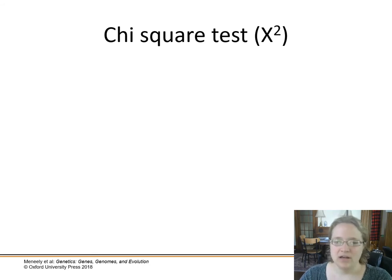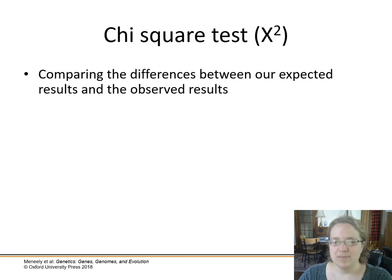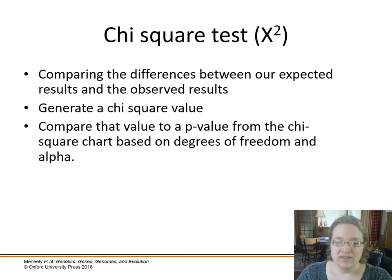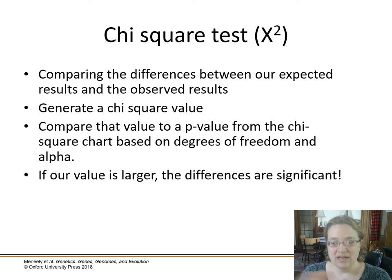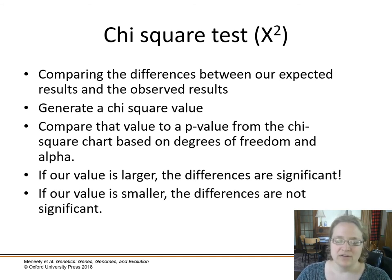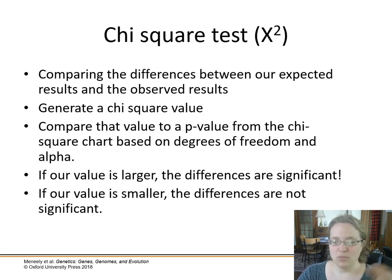The chi-square test uses this Greek letter chi — uppercase X with the square notation. It compares the size of the difference between our expected results and our observed results. We generate a chi-square value and then compare it to a critical value from the chi-square chart based on degrees of freedom and our alpha setting. If our differences are really big, our calculated value is very big and the difference is significant. If our value is very small, the differences are not significant. A small chi-square means we fit the prediction; a large one means we don't.